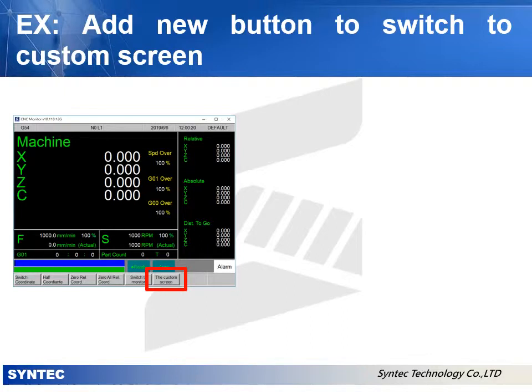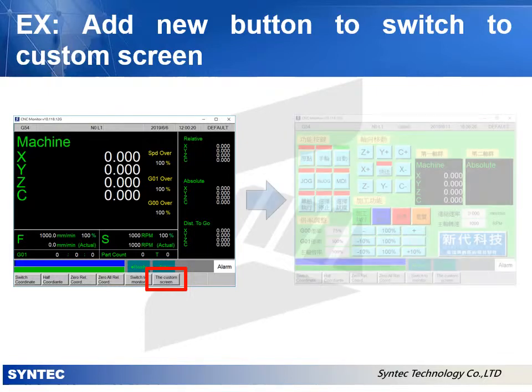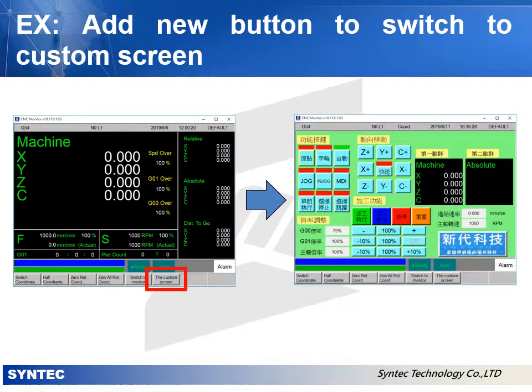This example shows how to add a custom screen and add a button in the menu bar of the machine coordinates. Then press this button to switch the screen to the custom screen.